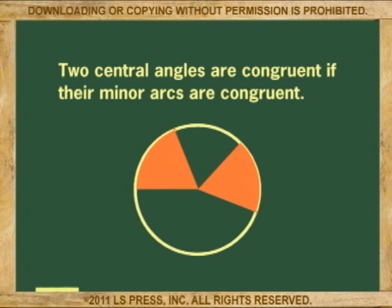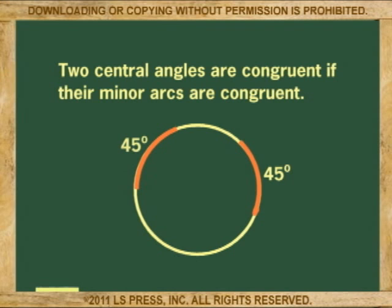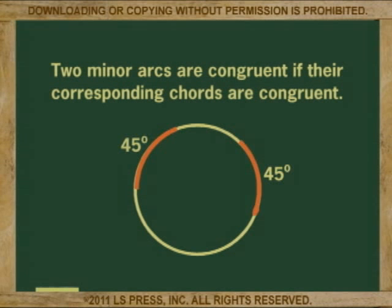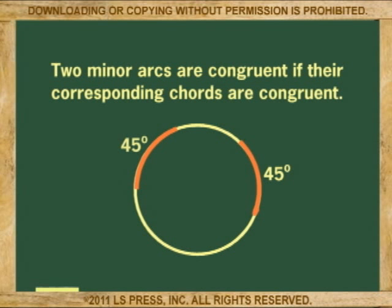Two central angles are congruent if their minor arcs are congruent. Two minor arcs are congruent if their corresponding chords are congruent.